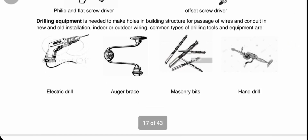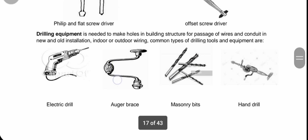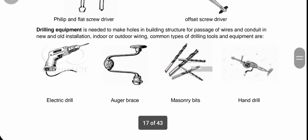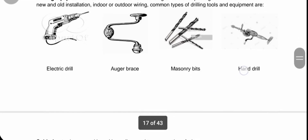Next tool in electrical installation and maintenance is drilling equipment. Drilling equipment is commonly used to make holes in a building structure for the passage of wire and conduit in new and old installations. Examples include the portable electric drill, the auger brace (which is manual), the hand drill (also manual), masonry bits, and various other bits for different tasks.